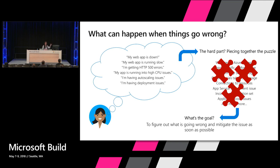These are what I call symptoms — this is how the problems present themselves. Someone calls in or you find out your web app is suddenly operating very slowly or you're getting 500 errors. The hard part is what comes next — you know what's going wrong, you know what the problem is manifesting as, but you don't really know the root cause. It probably works on your local machine, right? Piecing together all the puzzle pieces is difficult because there's a whole world of things that can go wrong with your web app.